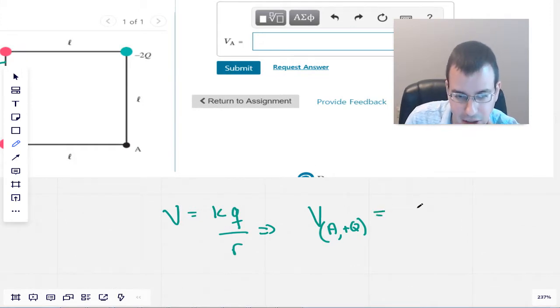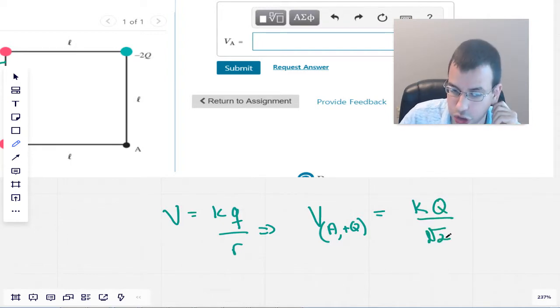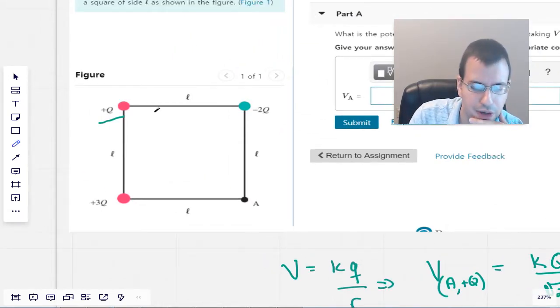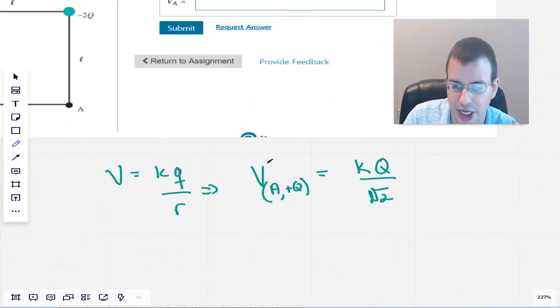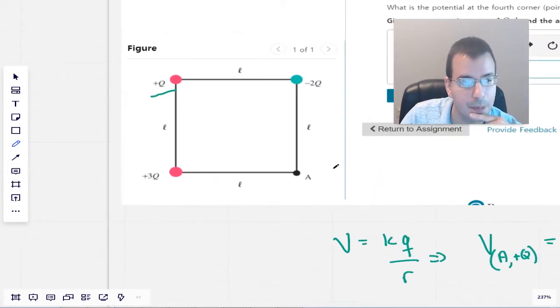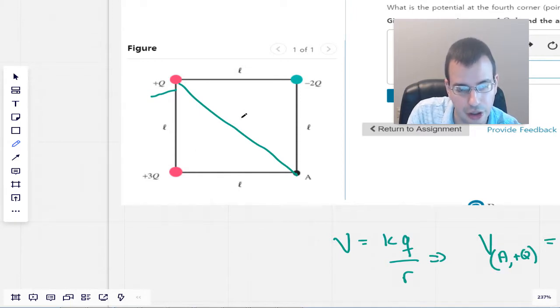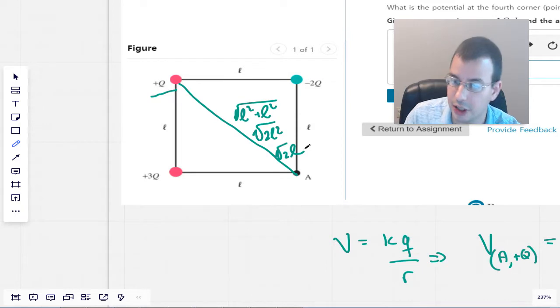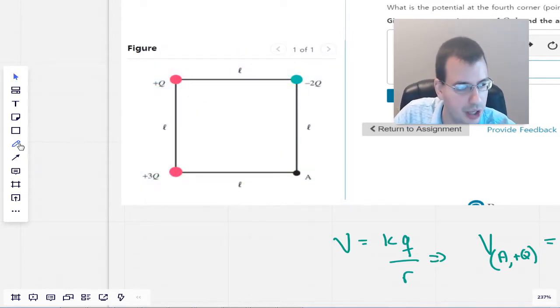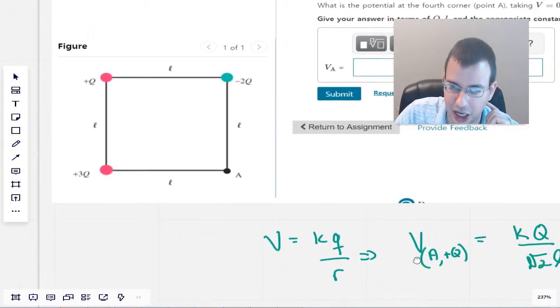So this will be K Q over square root of 2 times L. You might think, where'd that square root of 2 come from? The distance from Q to A right here is L squared plus L squared, square rooted. So you have L squared plus L squared, square rooted, square root of 2L squared, which is square root of 2 times L.